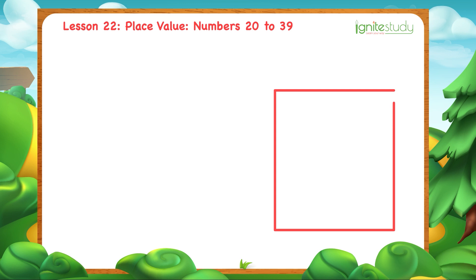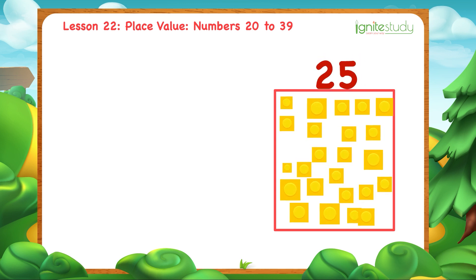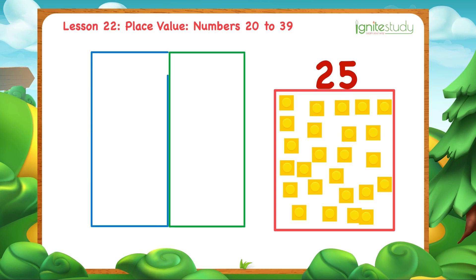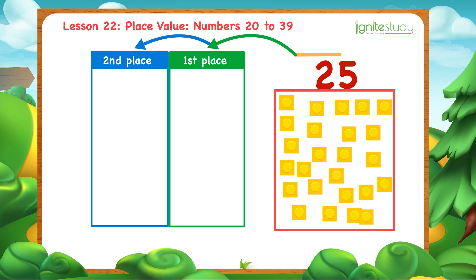Suppose we have 25 blocks. Here, we still have 2 places. Starting from the right, this is the first place. Then, this is the second place. Now, I put blocks into the first place.